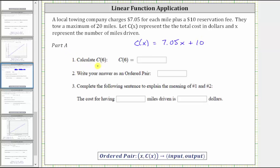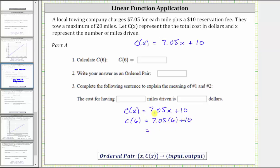Part A, number one: calculate the function value C of six, where six is the input and the function value is the output. To determine C of six, we begin with the function rule and substitute six for X, which means C of six equals 7.05 times six plus 10. 7.05 times six equals 42.3, giving us 42.3 plus 10, which equals 52.3.